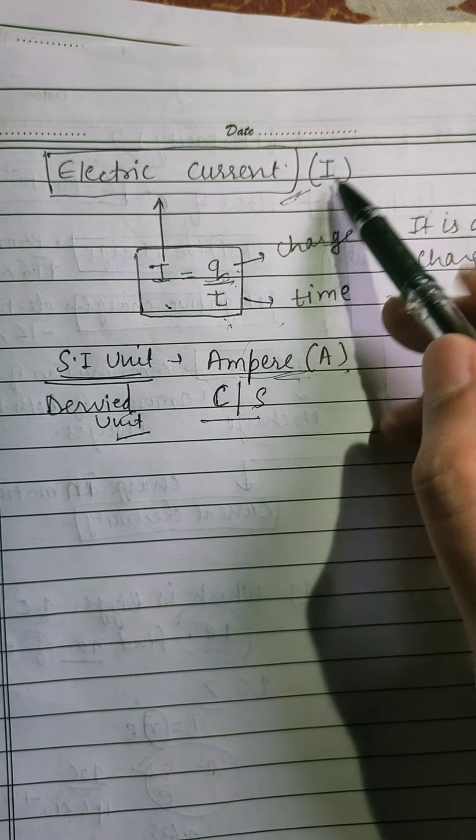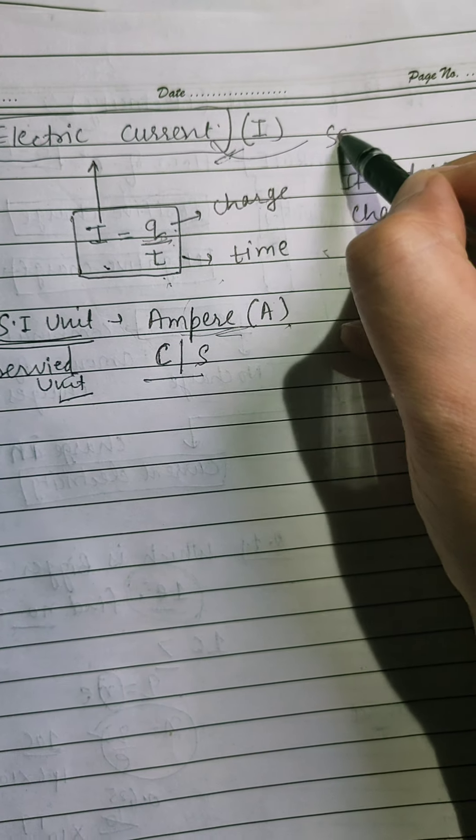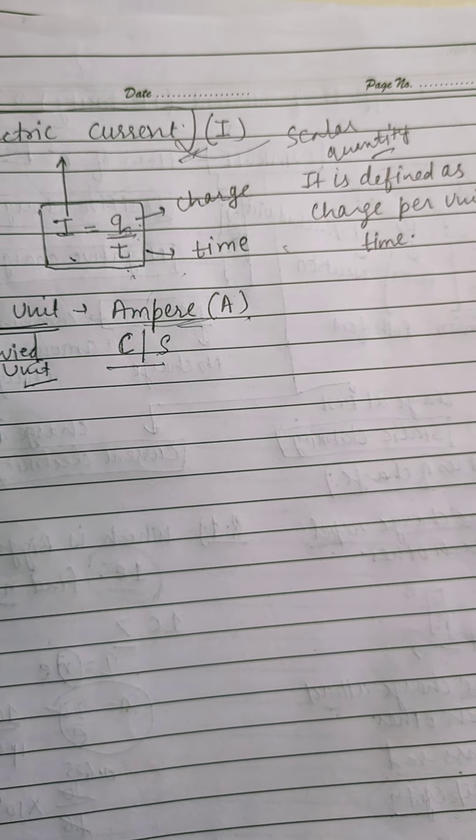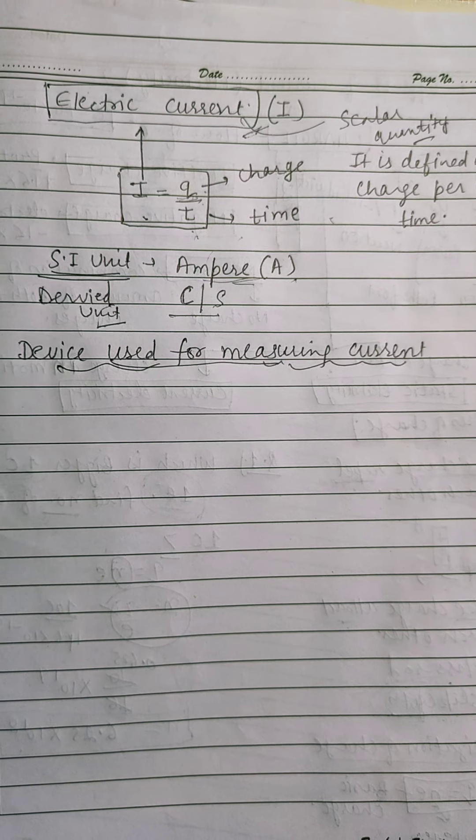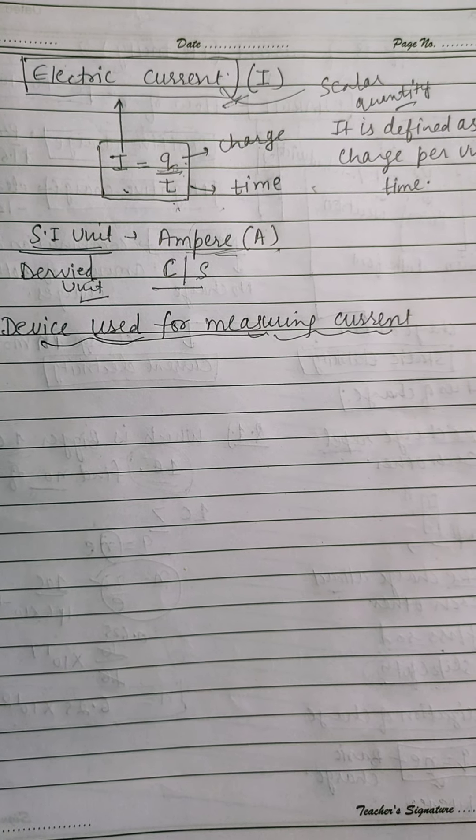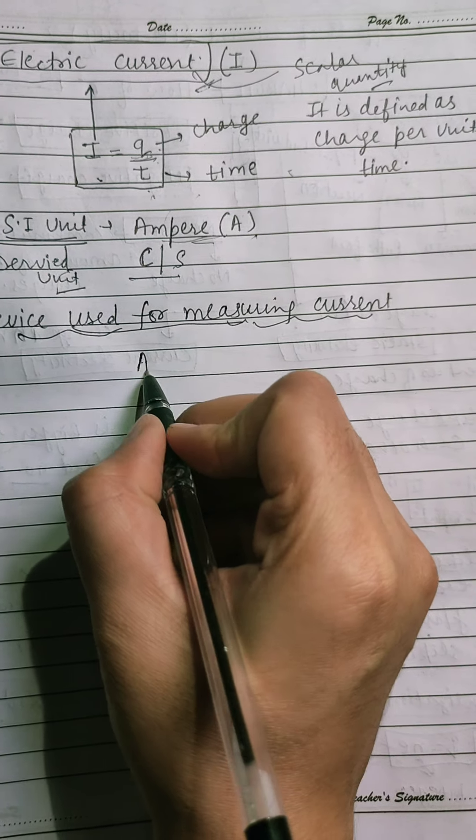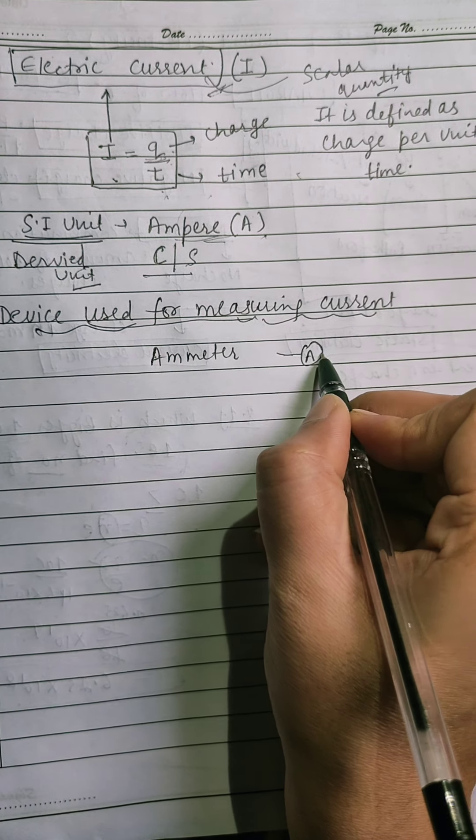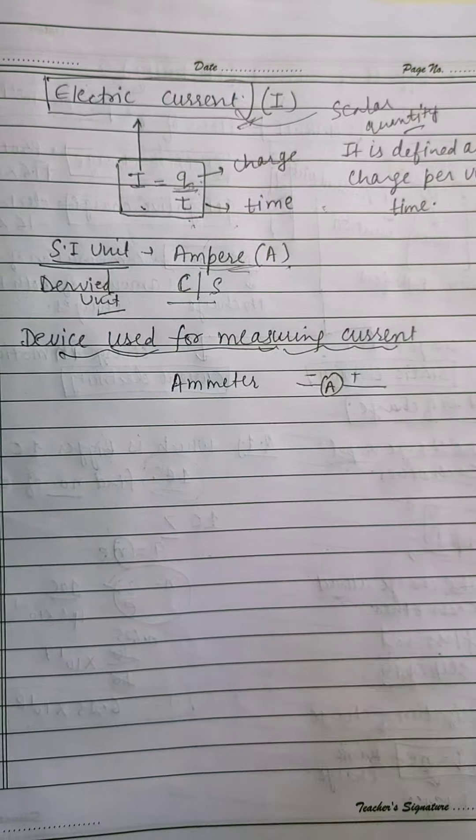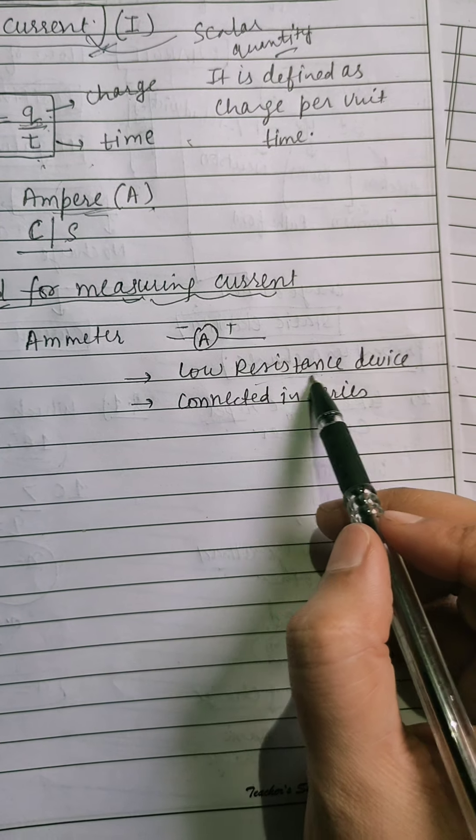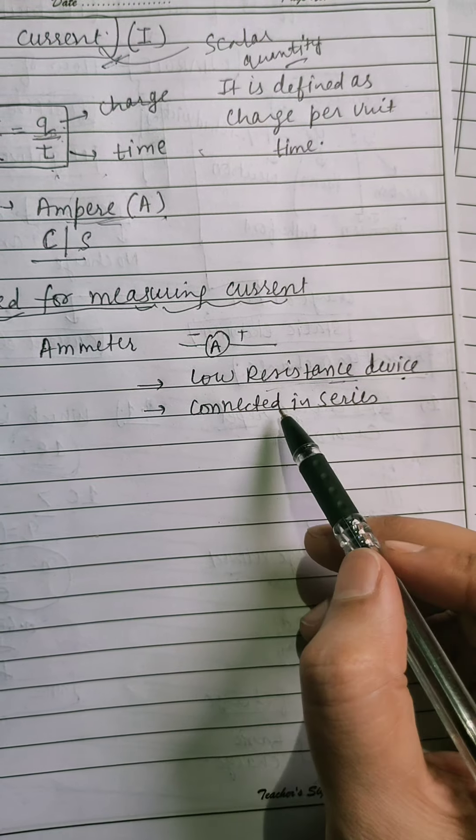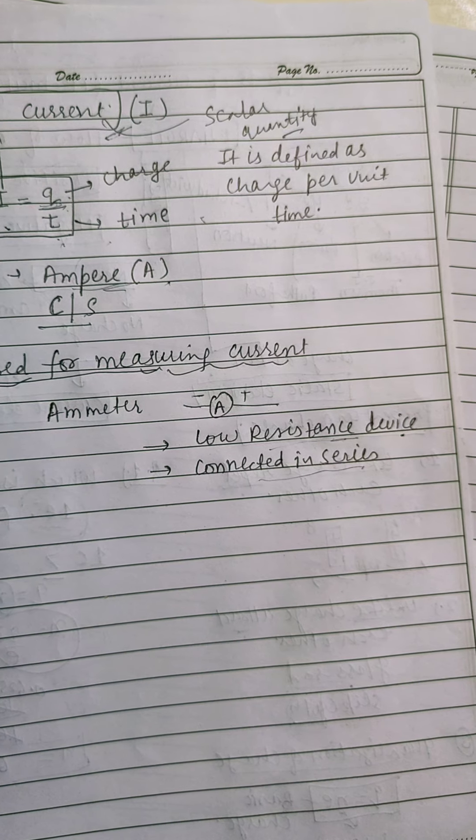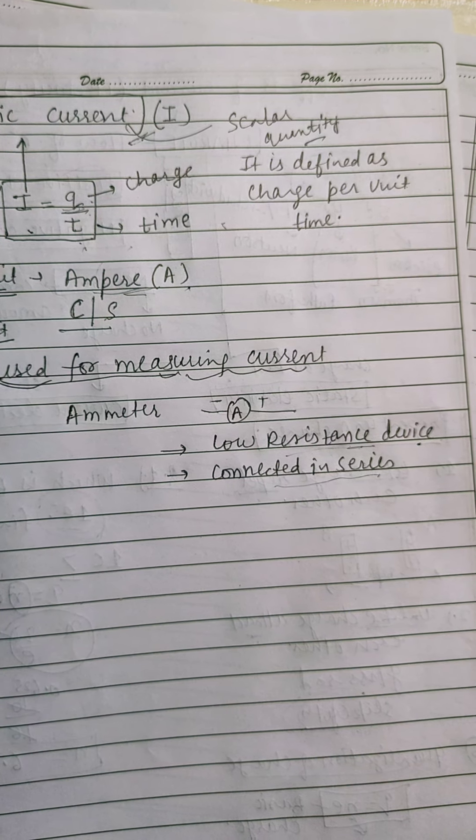And electric current is a scalar quantity. In 9th class, you study about what is scalar and what is vector. We can measure current with the help of a device. And that device name is ammeter. And the symbol for ammeter is A. Now, ammeter is a low resistance device. So, it is connected in series in any circuit.